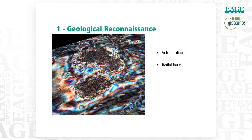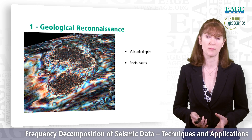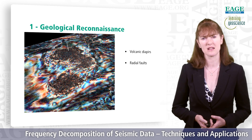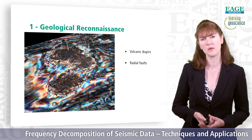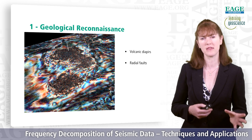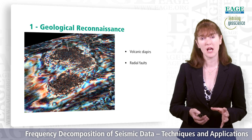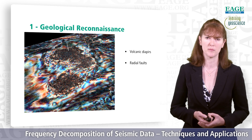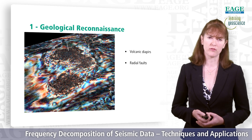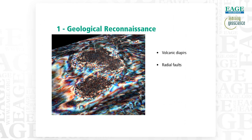Further on the left-hand side, we can see zones of low-amplitude chaotic response — these are volcanic diapirs — and we can start to see their shape and extent. We can see where two diapirs are getting quite close together and may connect at other layers in the volume. We can also see radial faults coming out from this uplift.